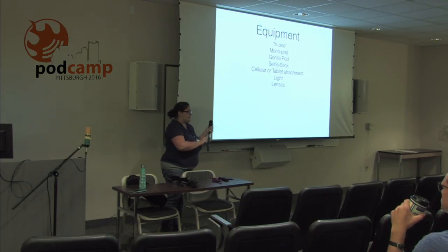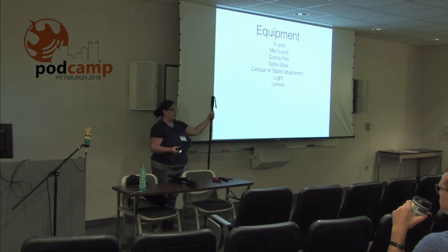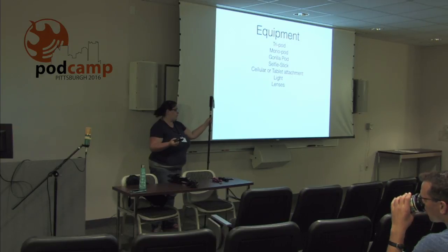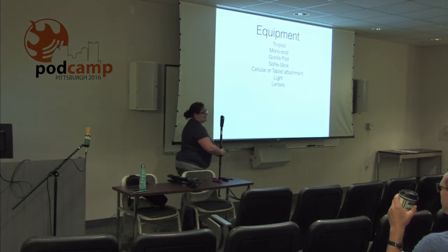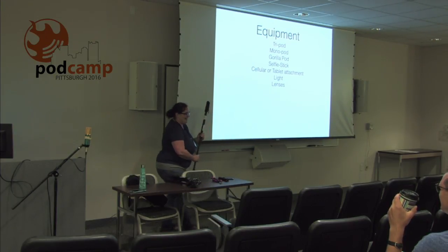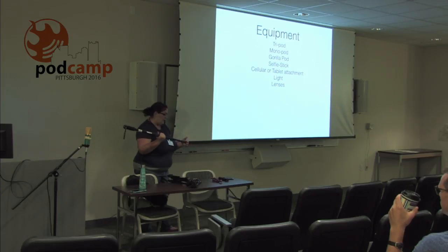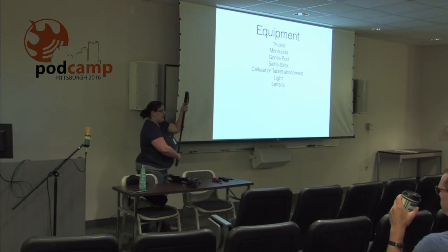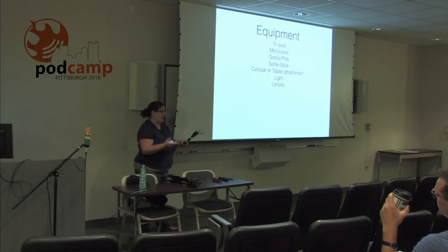A monopod is great for conferences like this. It's a steadier so you're not shaking with your phone or camera — you can take really nice photos. It's also great to walk with since people get out of your way. It's got a pointed end for grip on carpet and different height adjustments. Same price range as a tripod, very affordable, available at Walmart, Target, or online.